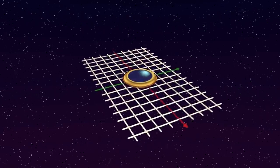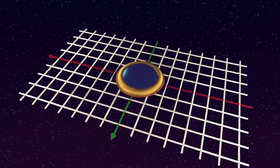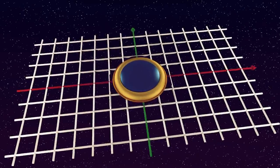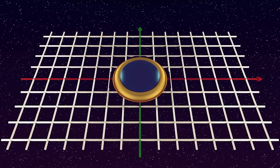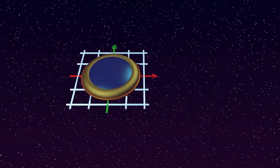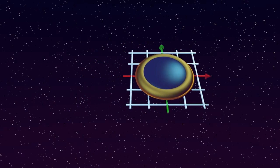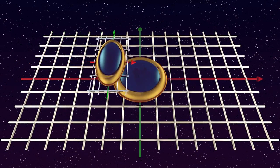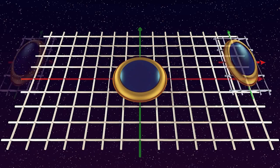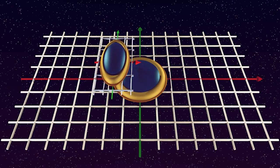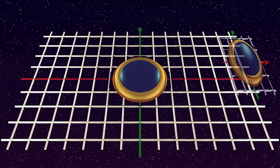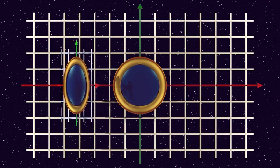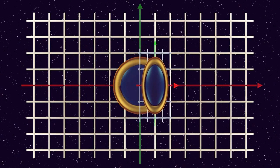We consider, as before, a circular lab at rest in a stationary inertial frame, and another identical lab in a moving inertial frame. As seen from the stationary frame, the moving lab appears to shrink along the direction of motion due to relativistic length contraction. When the two labs pass each other, the moving lab seems to fit entirely inside the stationary lab.